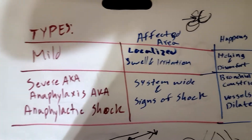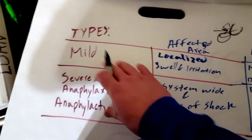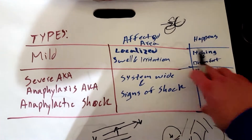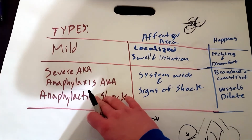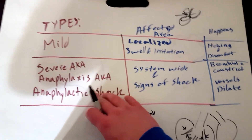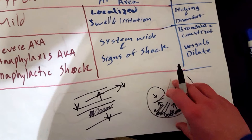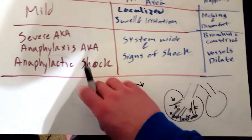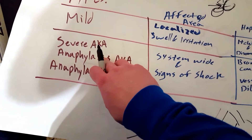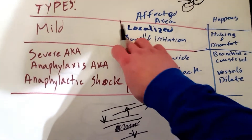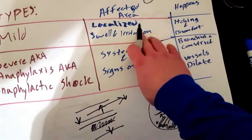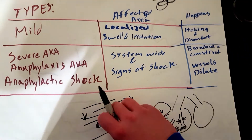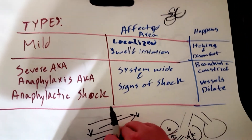So we know the signs and symptoms of mild and severe allergic reactions, and we know what actually happens in each case. Now let's look at what's really going on at a deeper level.